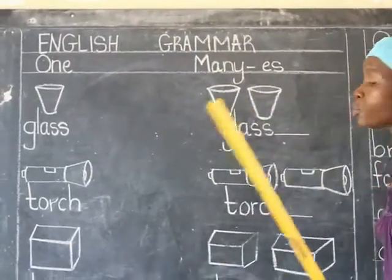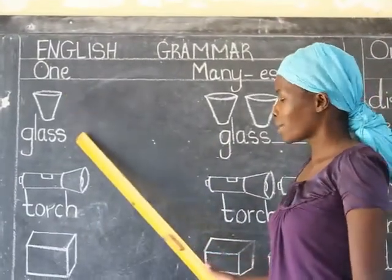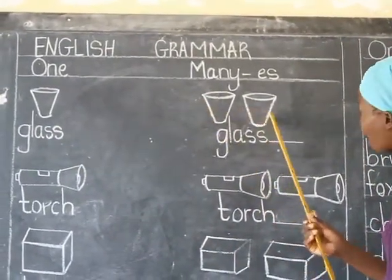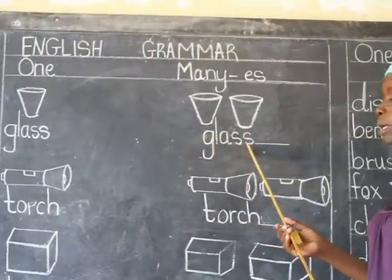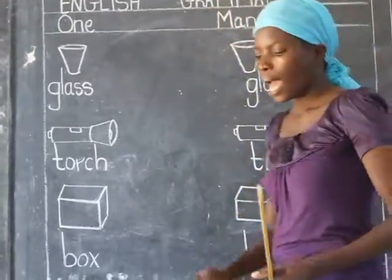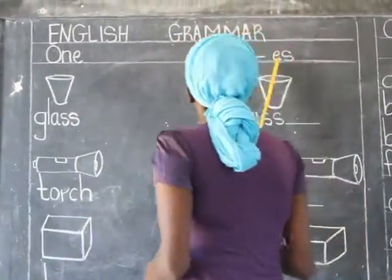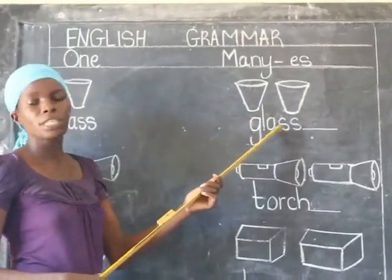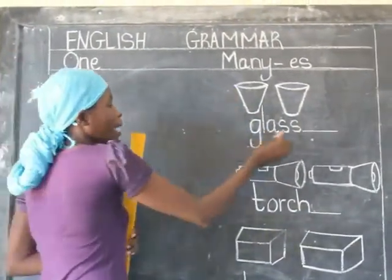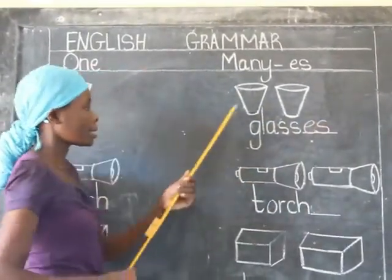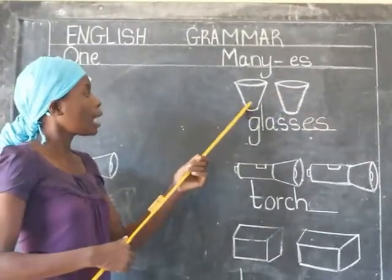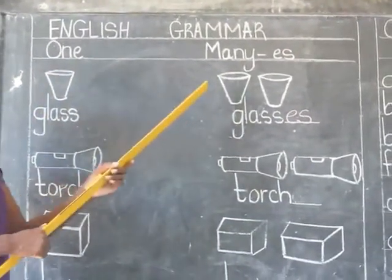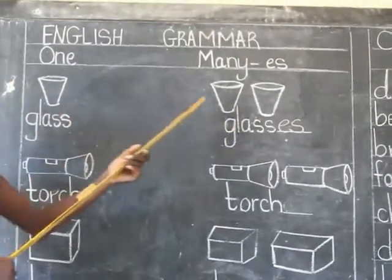On my chalkboard I have drawings. Our first example is glass. I have a drawing of glass and down here I have written glass. On the right side I have also drawings of more than one glass, but I have written glass, which is wrong. So I have to add E and S. Now it is correct — I will read: one glass, two glasses. One glass, two glasses.